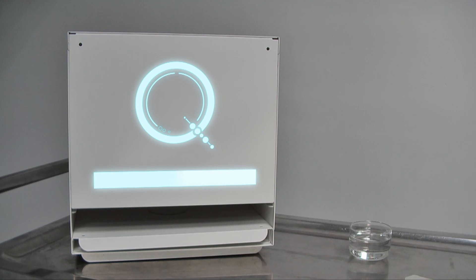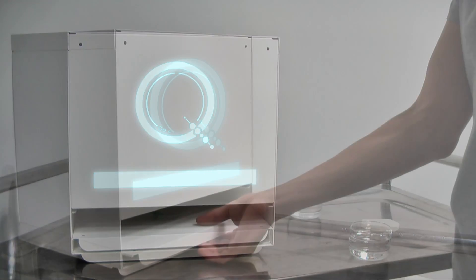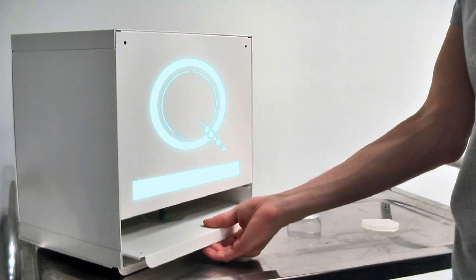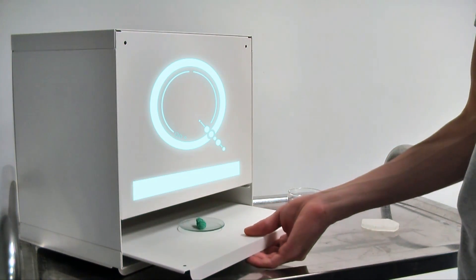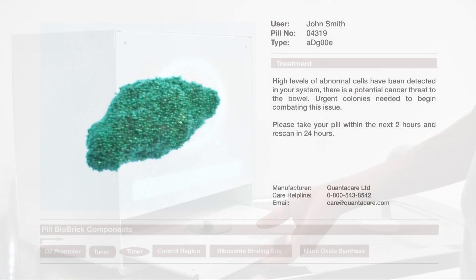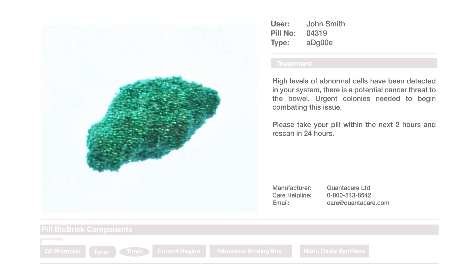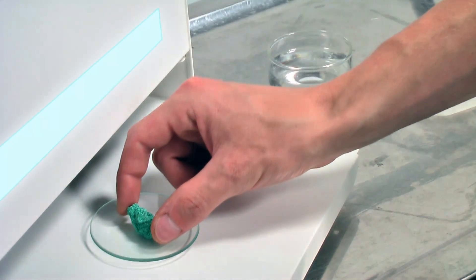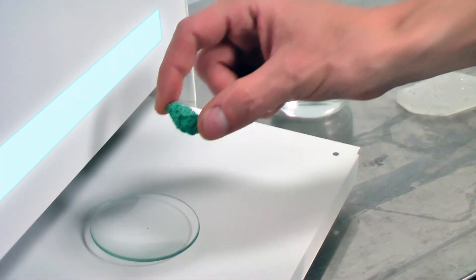If serious health problems are detected, then information is sent to the user's home Quanticare 3D pill printer and personalised bacterial pills are printed on demand. Our patented pills are designed and uniquely tailored to each individual's system, compiled with tried and tested biobricks that produce bacteria highly specialised for their task.